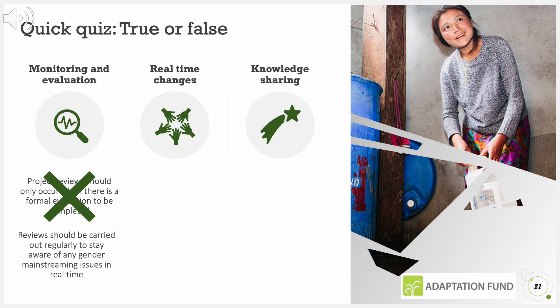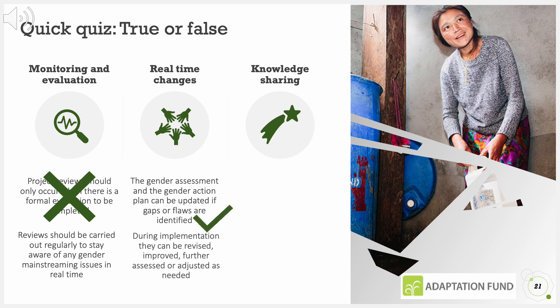True or false: The gender assessment in the gender action plan can be updated if gaps or flaws are identified. It is true. During implementation they can be revised, improved, further addressed, or adjusted as needed.